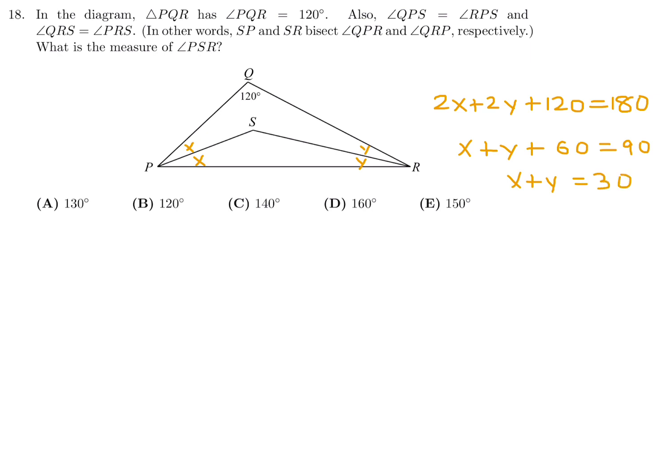Now we have to concentrate on this triangle, PSR. So this angle in here, I'll just call Z. So X plus Y plus Z is 180. And therefore, X plus Y is 30, since we got that. And therefore, Z would be 180 minus 30, and therefore Z is 150. So number 18, the answer is E.